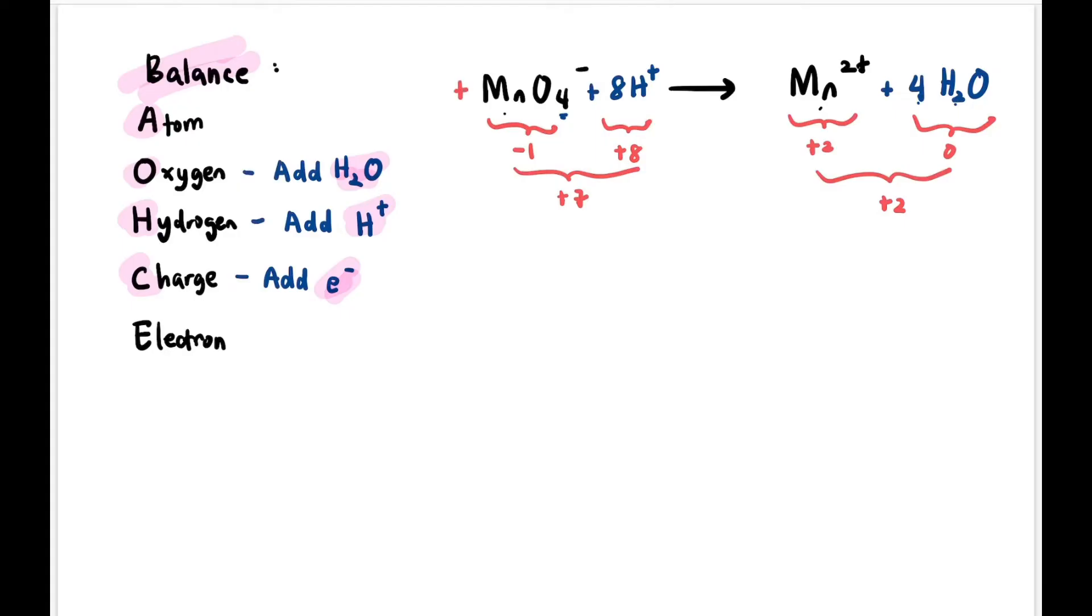So we have to add electrons on the side that is most positive, which is +7. So we add how many? Add 5 electrons. So if we add 5 electrons, it becomes -5 there. So overall on the left is +2, on the right is also +2, so it's balanced.